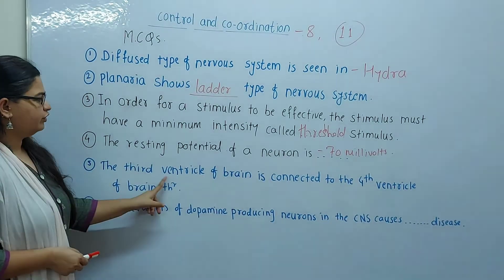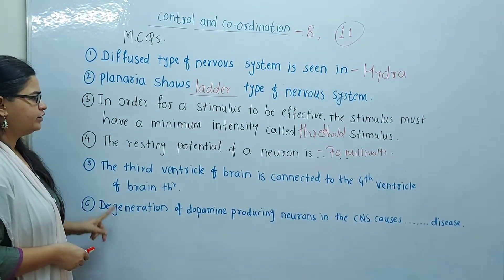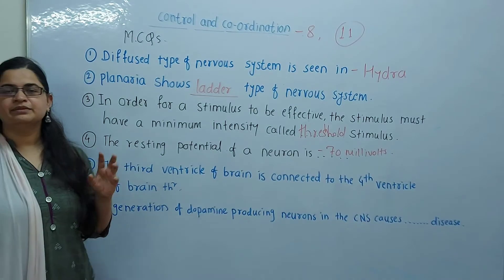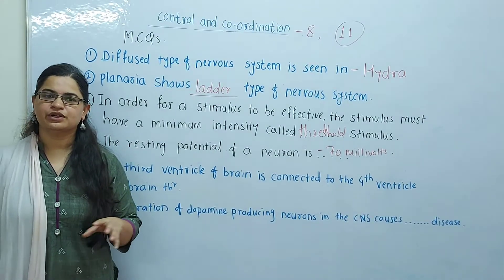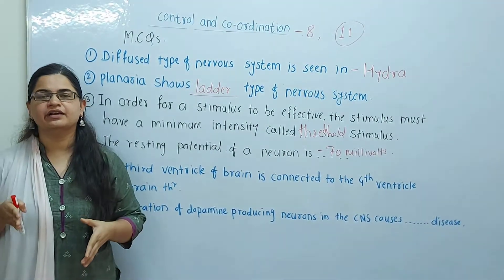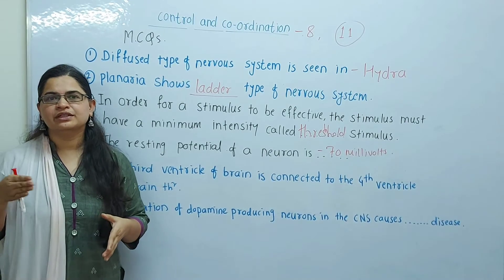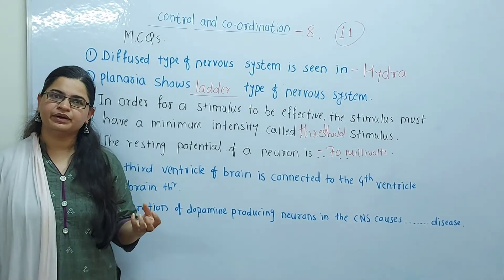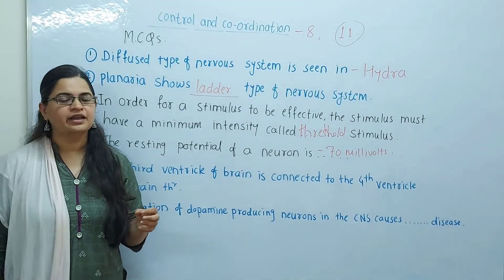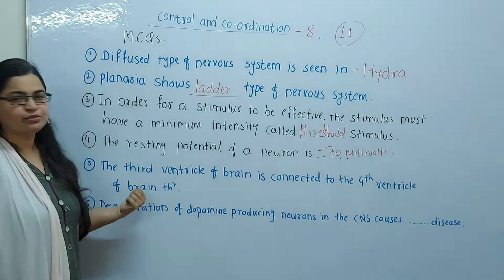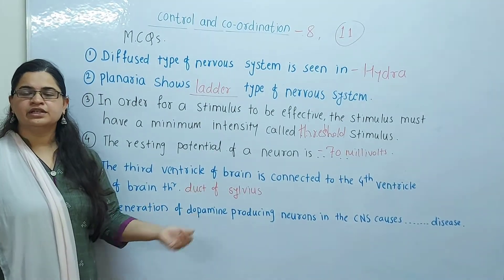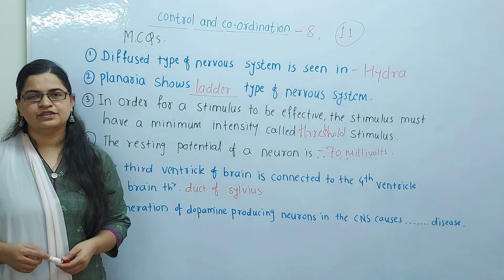The third ventricle of the brain is connected to the fourth ventricle of the brain through what? If you read the brain structure, you have to focus on the connection. Keep in mind, keep understanding. If you read the MCQs carefully, you won't lose marks. The answer is the Duct of Sylvius.